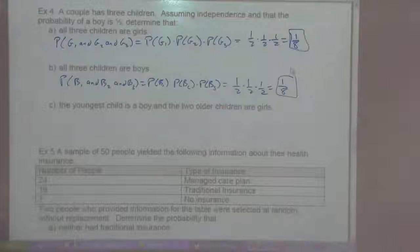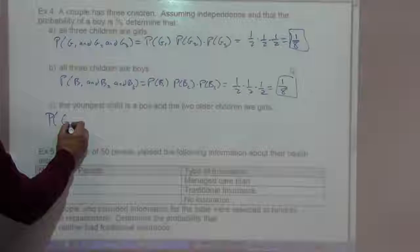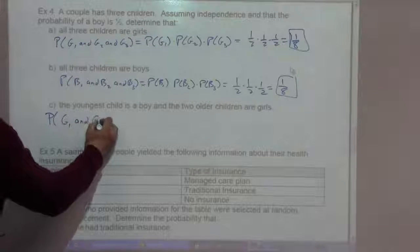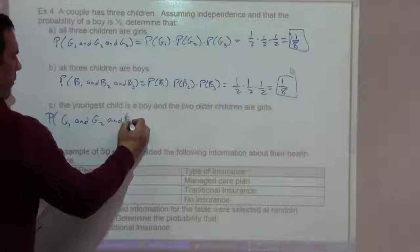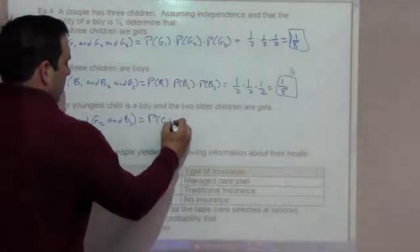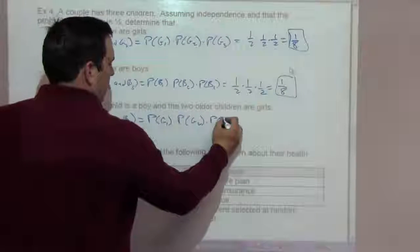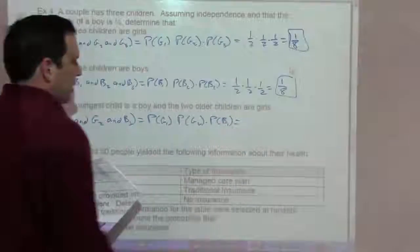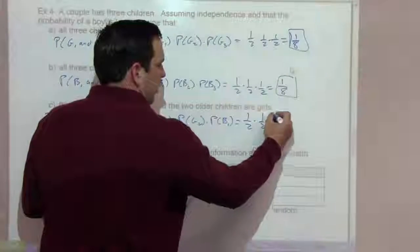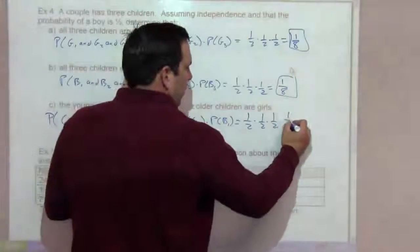The probability of the youngest child being a boy and the other two being girls is the probability of girl one and girl two and boy for the third child. One-half for the first child being a girl, one-half for the second child being a girl, and one-half for the third child being a boy — that's one-eighth.